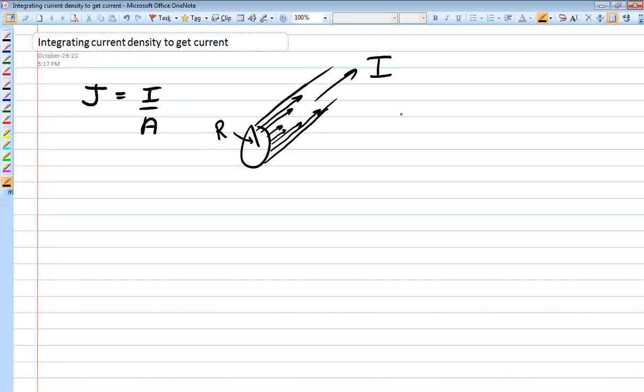So in order to get the total current, you would need to know what the functional relationship of the current density is to r. So I'll just make something up. J, let's say it's 6r squared.